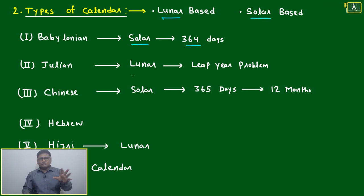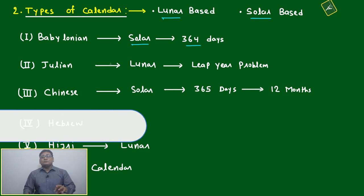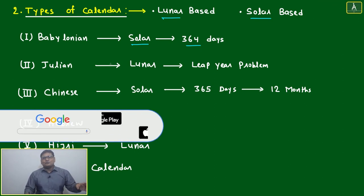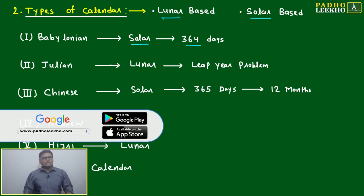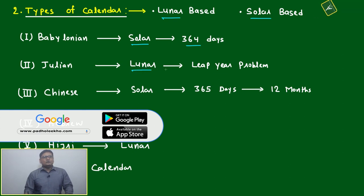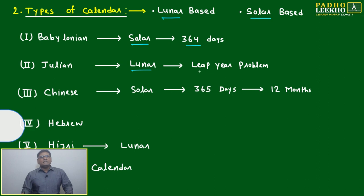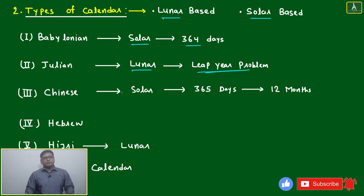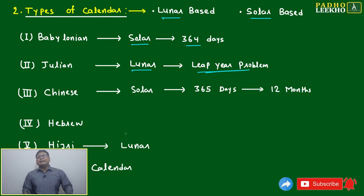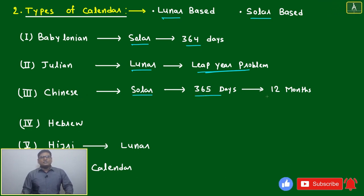We are not here to understand this particular season; if you want to understand it philosophically and scientifically, it is a much more interesting thing. The Julian calendar was made by Julius Caesar around 46 BC — that is lunar based. There was a leap year problem, and due to that it was finally replaced by the Gregorian calendar. The Chinese calendar is based on solar 365 days, 12 months, almost following the modern calendar.